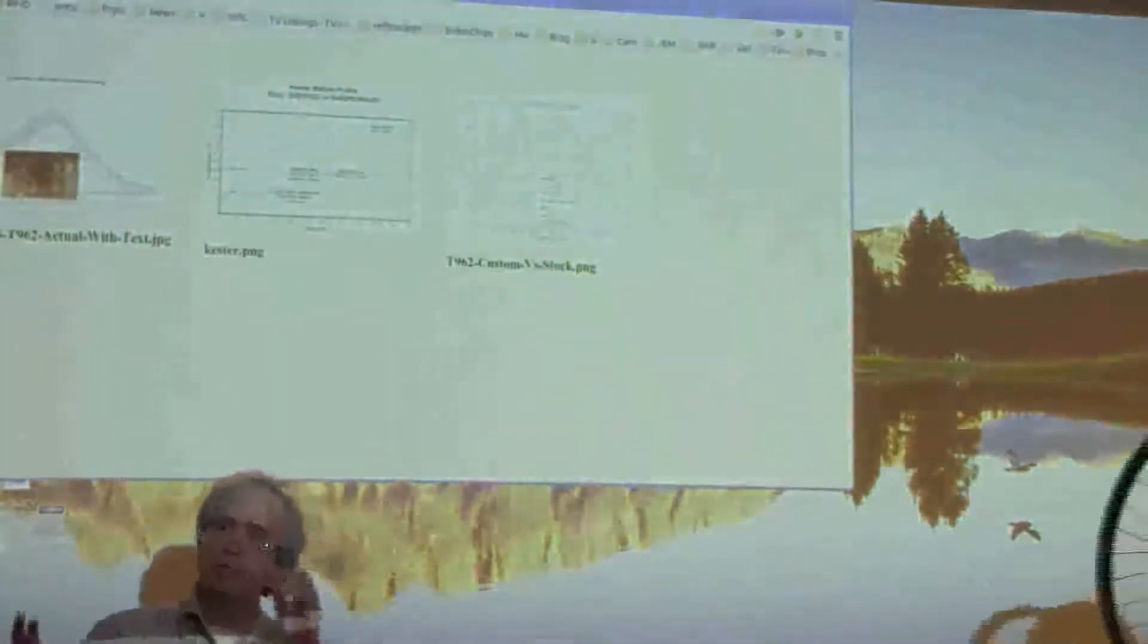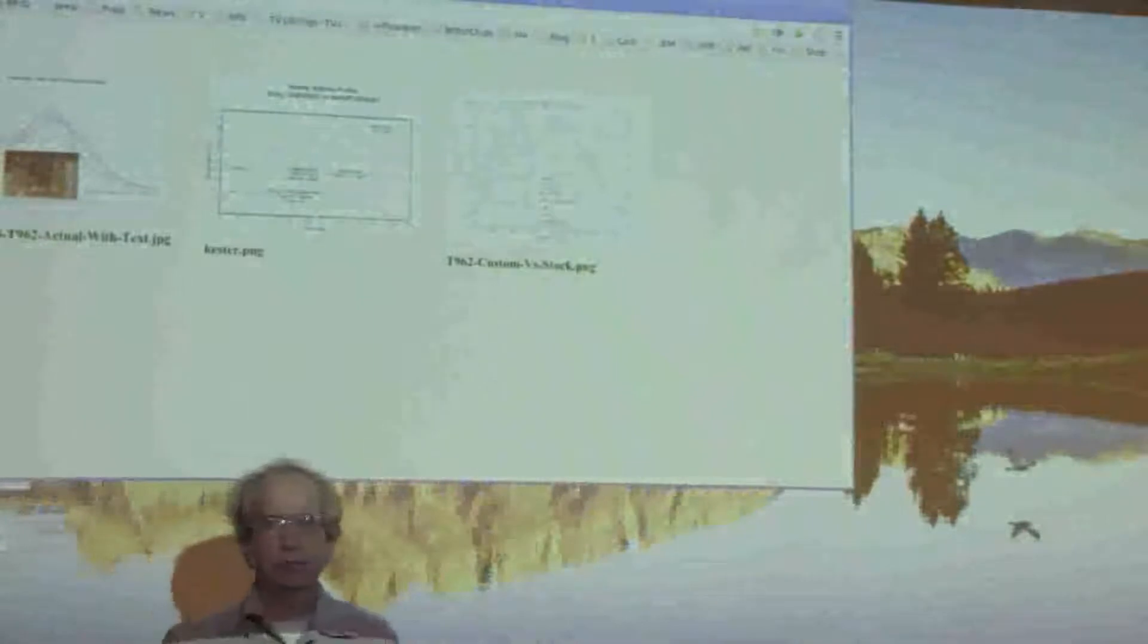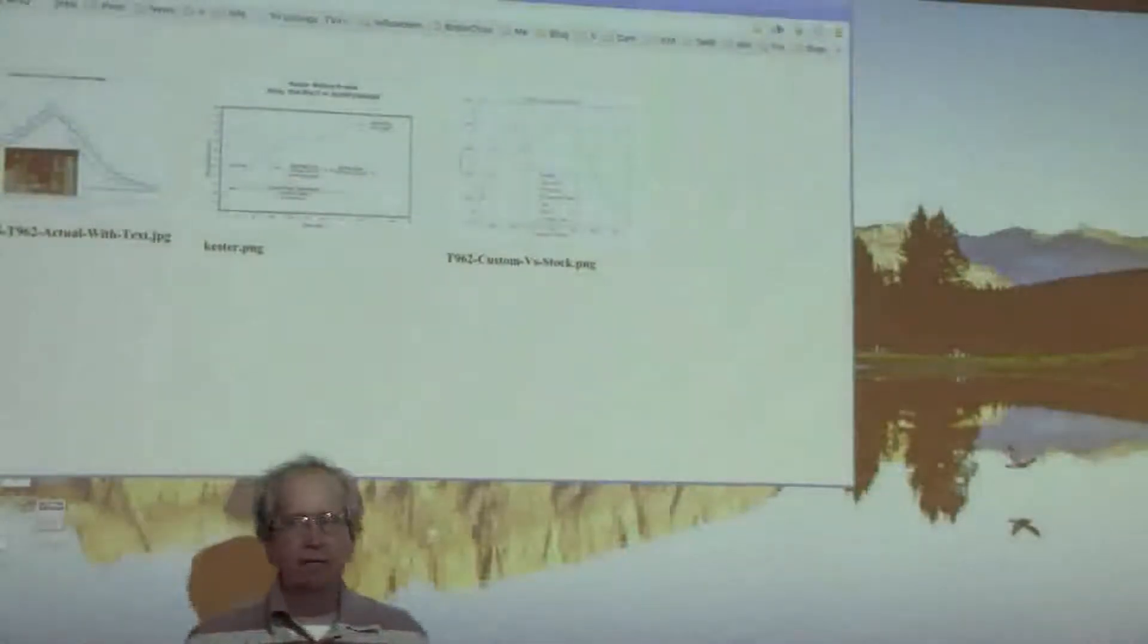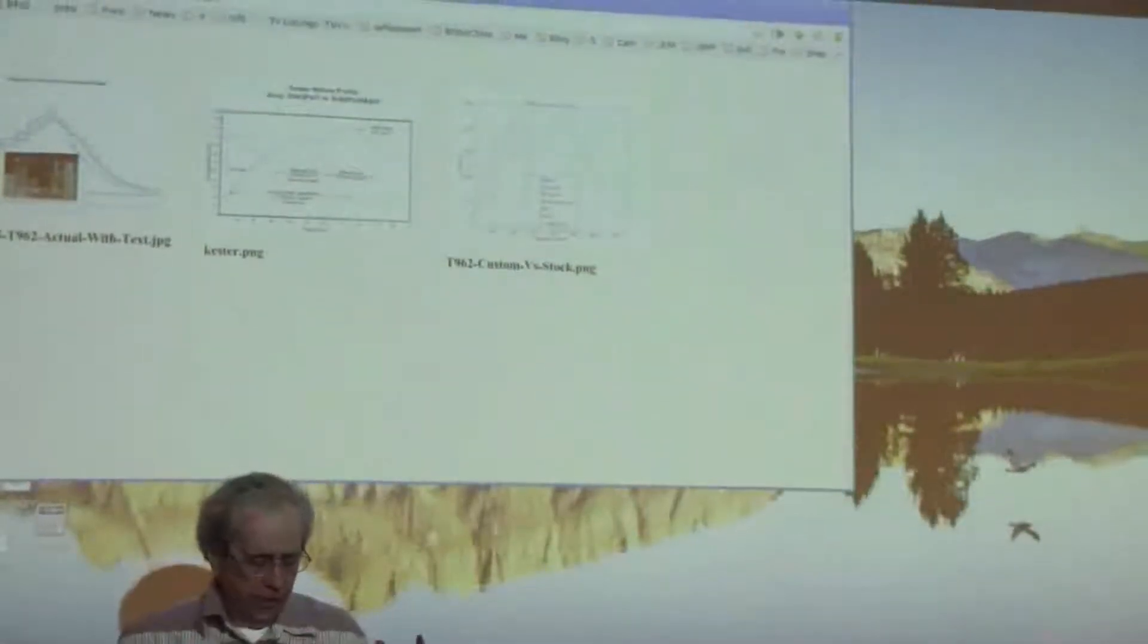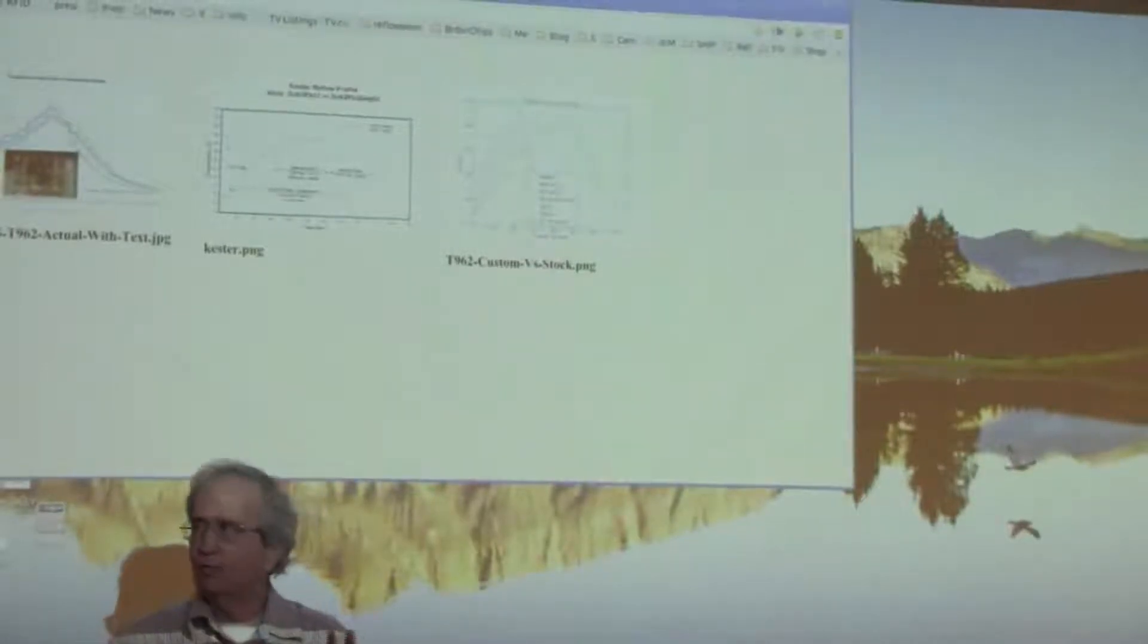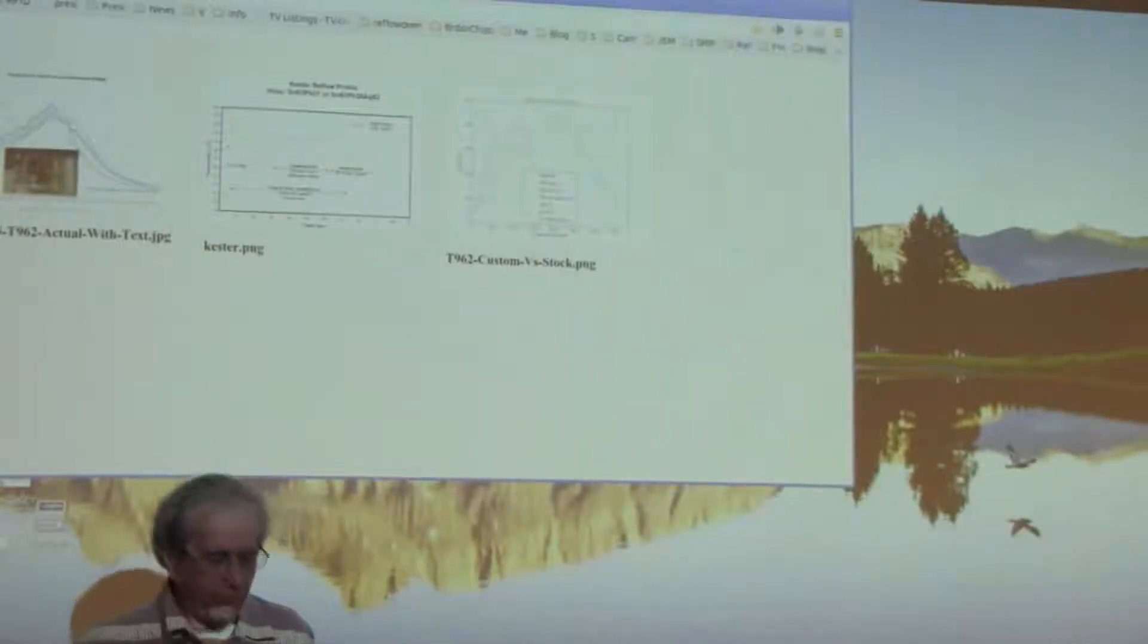So I've got one of these cheap Chinese reflow ovens. It's called the T962, and if you Google for that, you'll get 10,000 hits. You can buy them for a few hundred bucks. Making it work has been a learning process, and I just wanted to give you the four minutes compressed version.